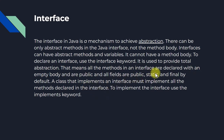When we have methods in the interface, they have an empty body — meaning we don't have any implementation there. A class that implements an interface must implement all the methods declared in the interface. To implement the interface, we use the implements keyword — the same way we use the extends keyword for inheritance.